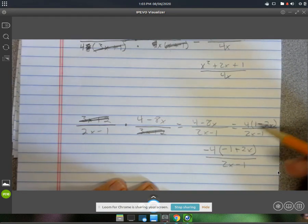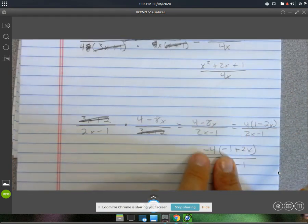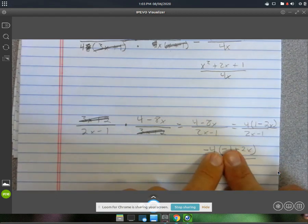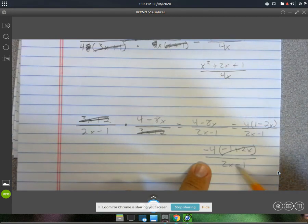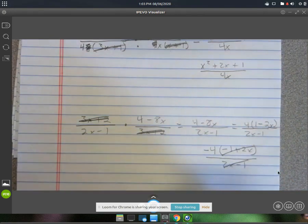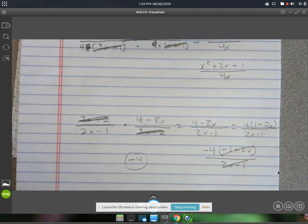So now that you factored out that negative, you know, all I did really was I put the negative on the 4, and then I changed both the signs inside. But now that it's factored, you can cancel that factor with that factor. Alright. So your final answer is just negative 4. That's all that you have left after that.